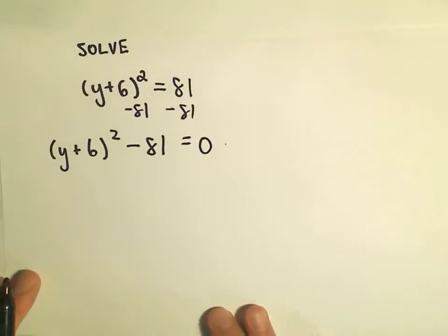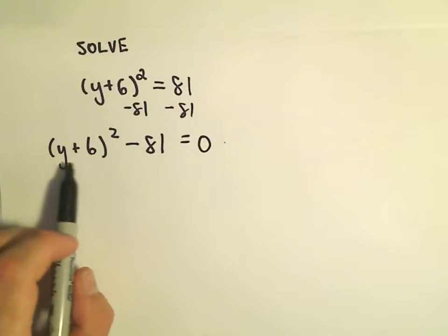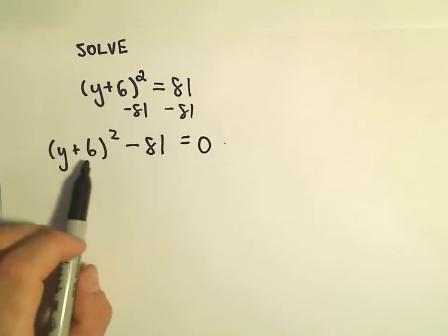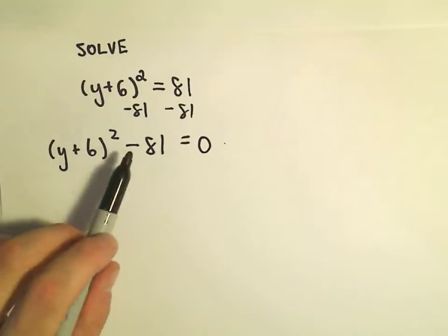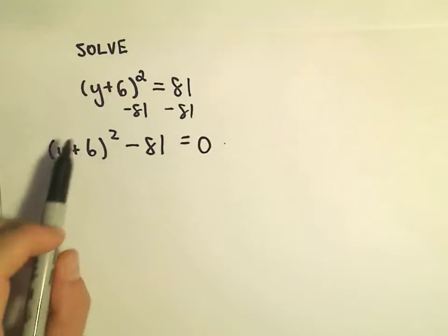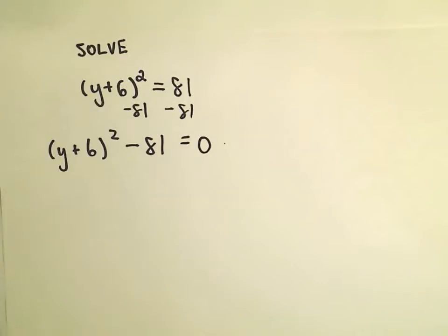Now there's two things you could do here. You could foil out the y plus 6—take y plus 6 times y plus 6, collect your like terms, subtract 81, and then try to refactor that.